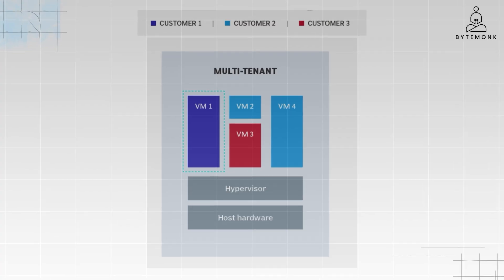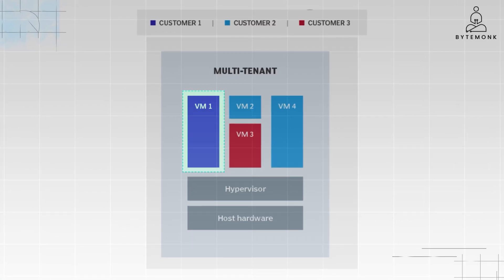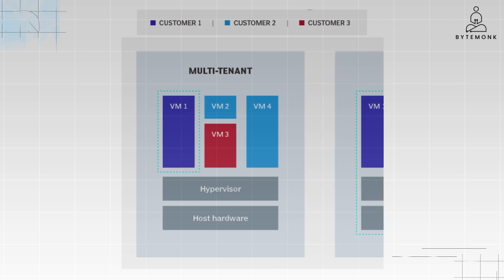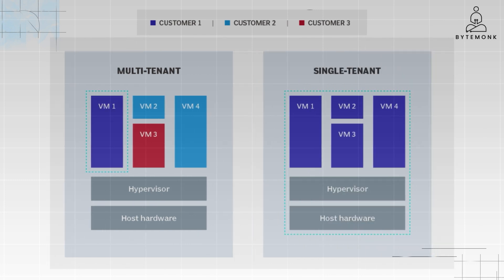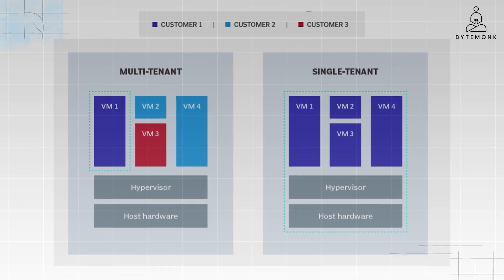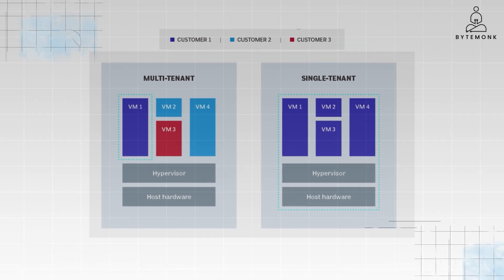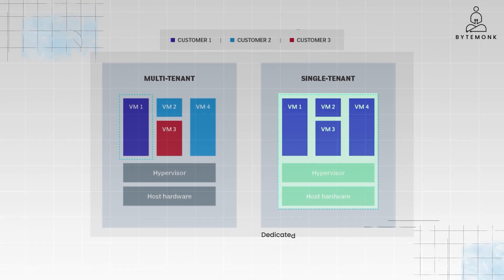In a multi-tenant architecture, a single instance of a software application or a single infrastructure serves multiple groups of users, known as tenants. This is different from a single-tenant model where each user or group has their own dedicated, isolated instance of the software.